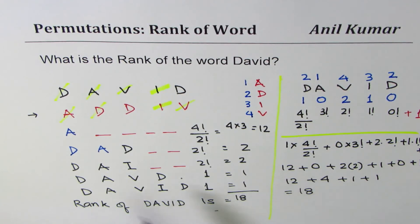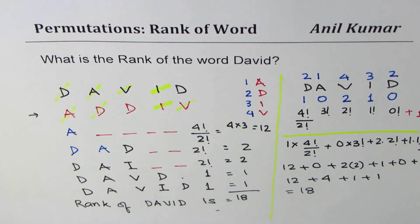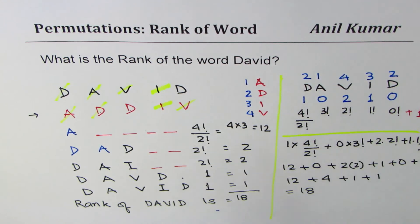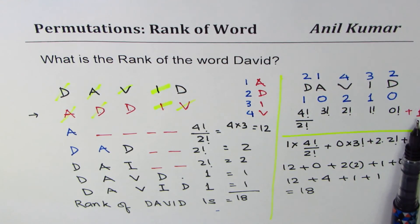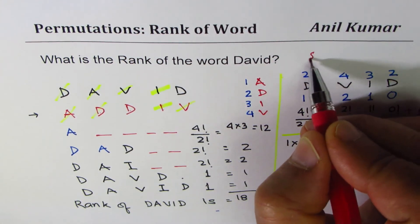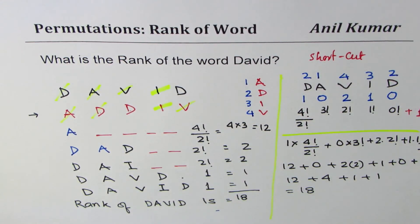So this is the shortcut method, where we assign position numbers and figure out combinations of words where order is important. In case of repetition, we divide by the number of letters being repeated, following principles of permutations. Add them all, and at the end add 1 to get the rank of the word itself. We'll explore these methods further with slightly bigger words. I hope that helps — feel free to write your comments and share my videos. Thanks for watching.